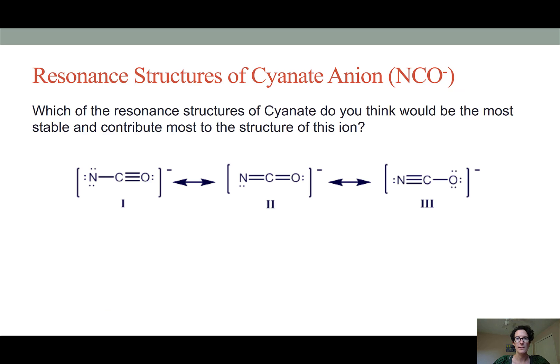Now one last practice for you. Here are three different depictions of the ions cyanate. Go ahead and assign the formal charge to the three atoms in each of these three Lewis structures, and then determine which of these structures is going to be most stable and therefore contribute the most to the structure of the ion. Pause now and resume once you've assigned the charges.